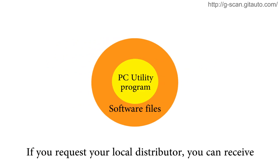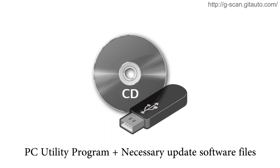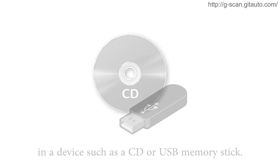If you request from your local distributor, you can receive the PC Utility Program plus necessary update software files in a device such as a CD or a USB memory stick. Extract the files and install the program.